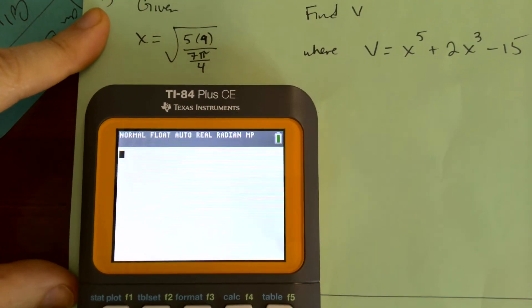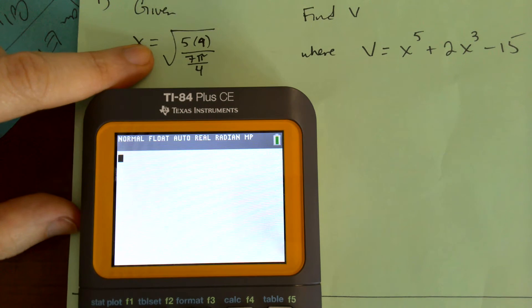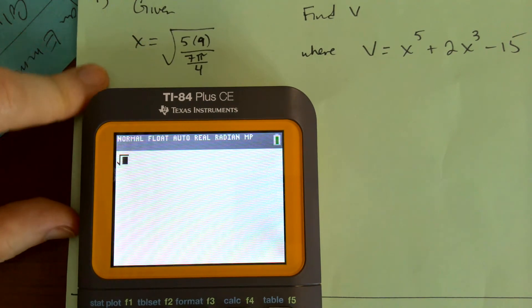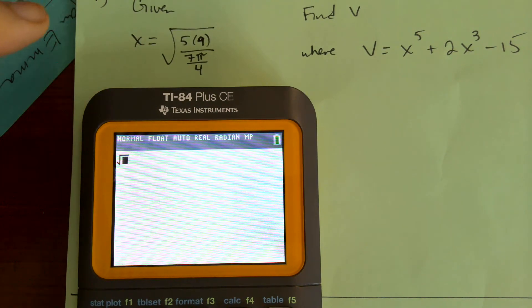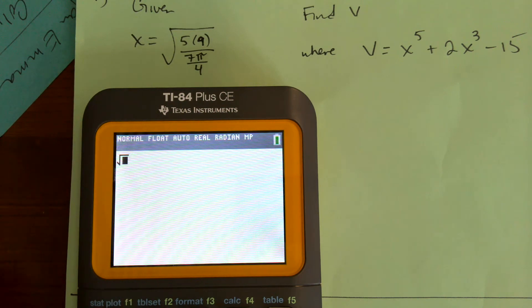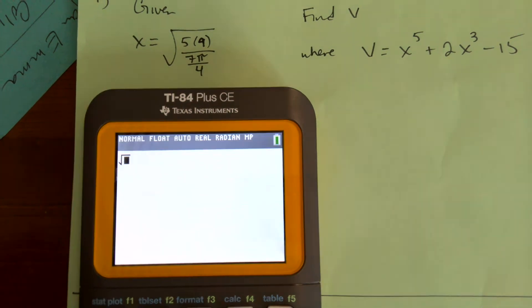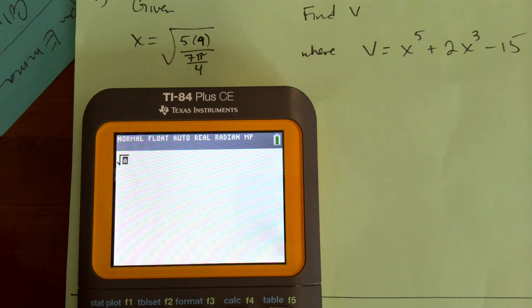All right, so I'm going to type this radical into my calculator. So I hit the radical. Okay, make sure that you're able to do this, guys. So pause the video if you can't find things. And then I go alpha y equals, and I hit this.